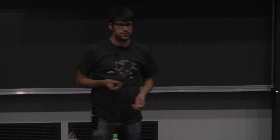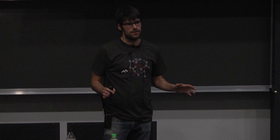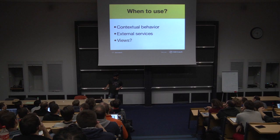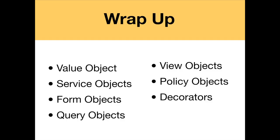This is useful for contextual behavior. Also external services. You never, ever, ever, ever, ever want to make an external web service call in a callback. That will cause you pain later, and you will remember this now. And sometimes you can use them in views. So that is the seven patterns that we covered. I know that was quite quick. But I want to leave you with one parting thought.